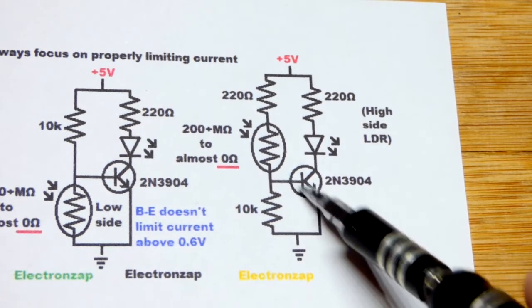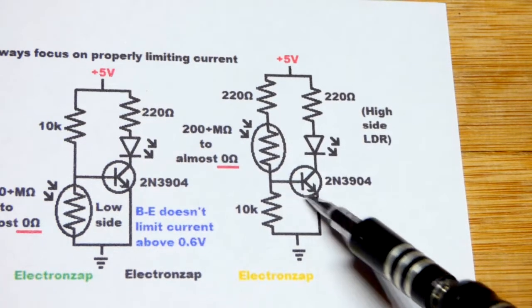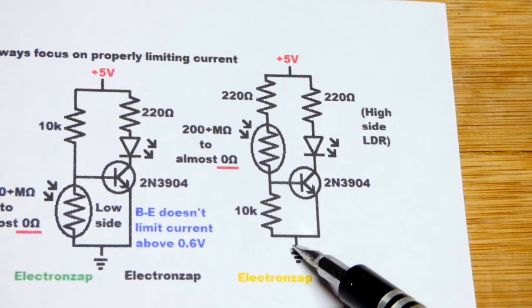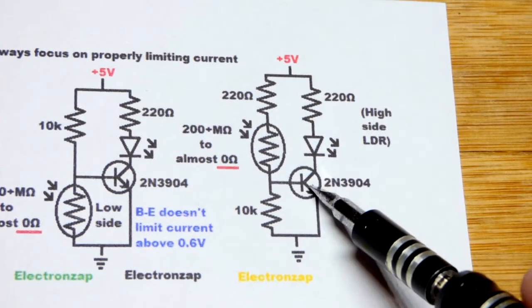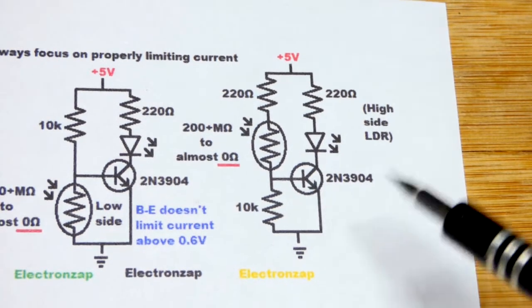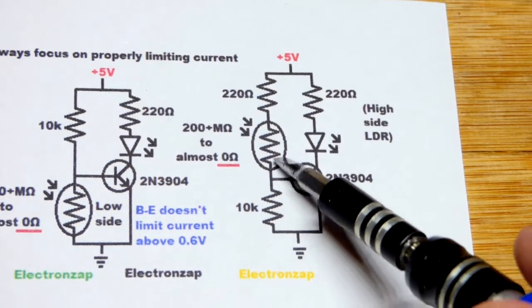It's going to drop that voltage, but after that, it's just going to conduct whatever current you apply to it. And so maybe the light-dependent resistor will burn out, maybe the transistor will burn out. So you need to limit that current.